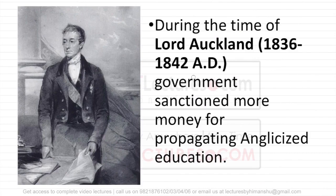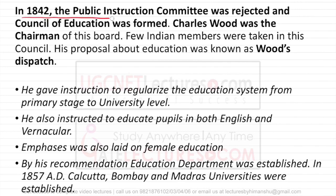During Lord Auckland's time, the government sanctioned more money — beyond the earlier 1 lakh rupees from the Charter of 1813 — and that too for Anglicized education in India. In 1842, the Public Instruction Committee was rejected and a Council of Education was formed under the chairmanship of Charles Wood, with a few Indian members but effectively negligible. They recommended many proposals for education, known as Wood's Dispatch.